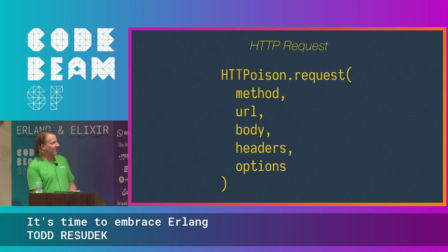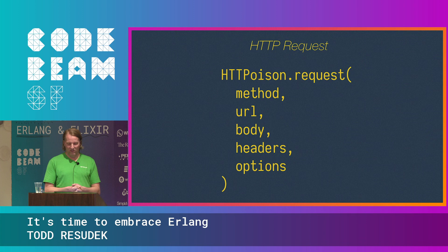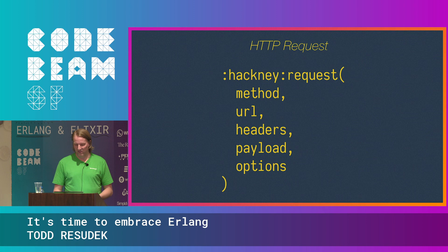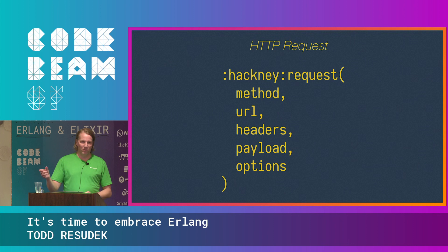It's time to have a tough talk, and it's about HTTPoison. Anybody working in Elixir or Phoenix is very familiar with this — we use HTTPoison to make HTTP requests. The function looks like this: you hit the request function and give it five arguments in this order. What some people don't investigate is how this works. HTTPoison has a direct dependency on Hackney, which is an Erlang library. If you look at Hackney, it also has five arguments — the big difference being that the payload and headers are flipped in position.